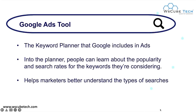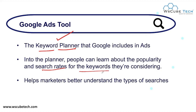Next, we have the Google Ads tool. With Google Ads we can use Keyword Planner — in our keyword research section we'll learn how to use it in detail. With Keyword Planner you can get ideas about your primary keyword as well as related keywords. Through the planner, people can also learn about the popularity and search rate of a particular keyword, helping marketers better understand the type of searches.